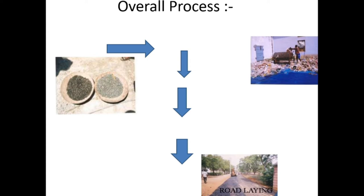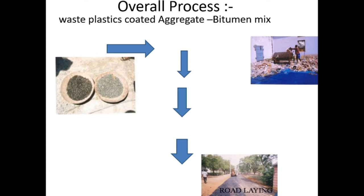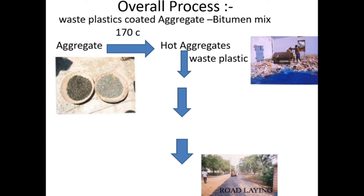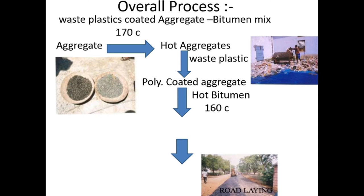The overall process: first, waste plastic coated aggregate with bitumen mix. Aggregate is heated at 170 degrees Celsius — that is hot aggregate. Then waste plastic in shredded form is added on the hot aggregate, which is called poly-coated aggregate. Then hot bitumen is added at 160 degrees Celsius.